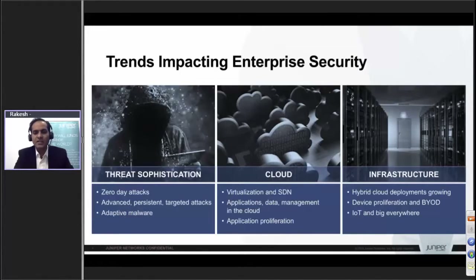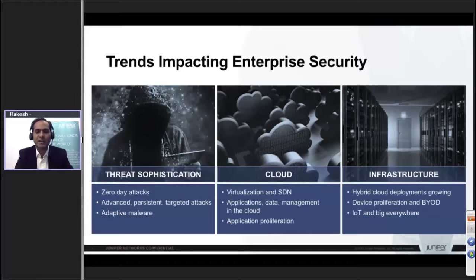The third trend is the number of devices in the infrastructure — the infrastructure itself is growing fast. BYOD was a big thing; now IoT is the big thing. Once upon a time, the only IoT devices in our campus were access control devices and IP telephony. Now the number of devices is expected to grow much faster.